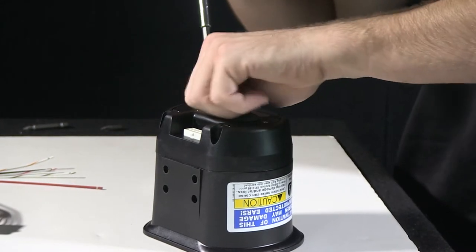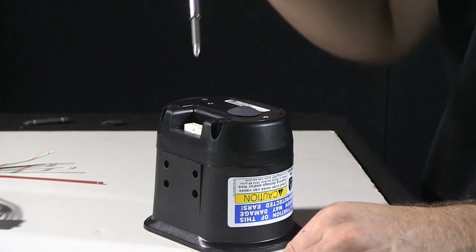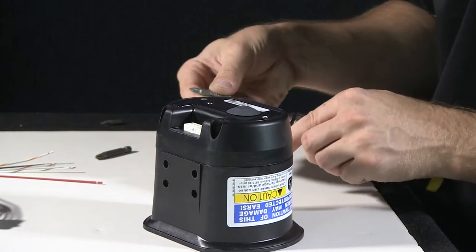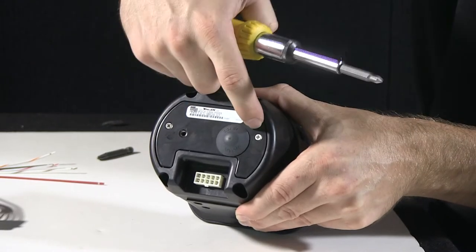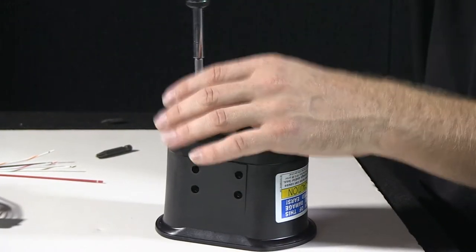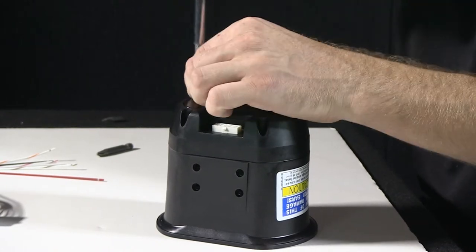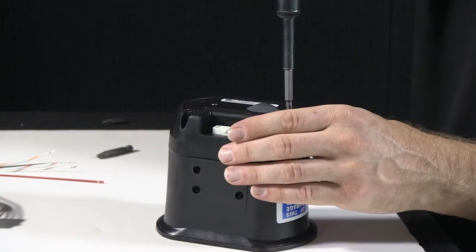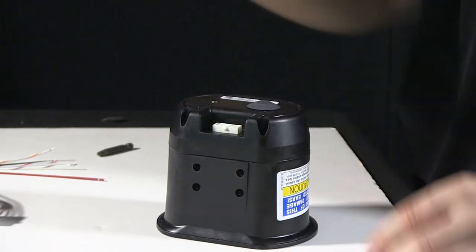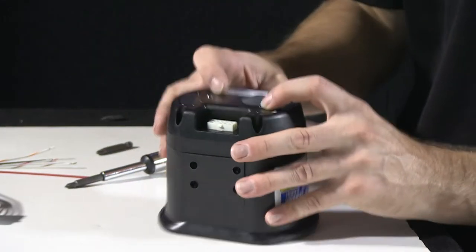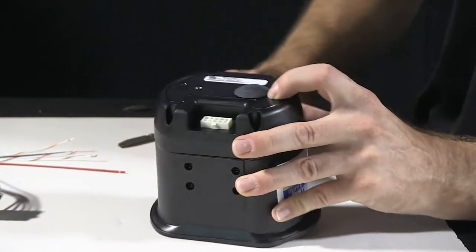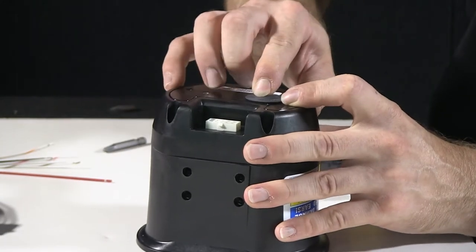I'm going to start with removing the rear center screw here. The two silver screws on the sides as well. This little portion here, a little bump, is actually a poly fuse holder cover.